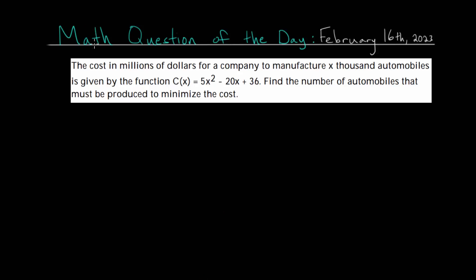In this video, I'd like to talk about the math question of the day for February 16th, 2023. With this word problem, we have that the cost in millions of dollars for a company to manufacture x thousand automobiles is given by the function c of x, which is a second degree polynomial or a quadratic. We need to find the number of automobiles that must be produced to minimize the cost.